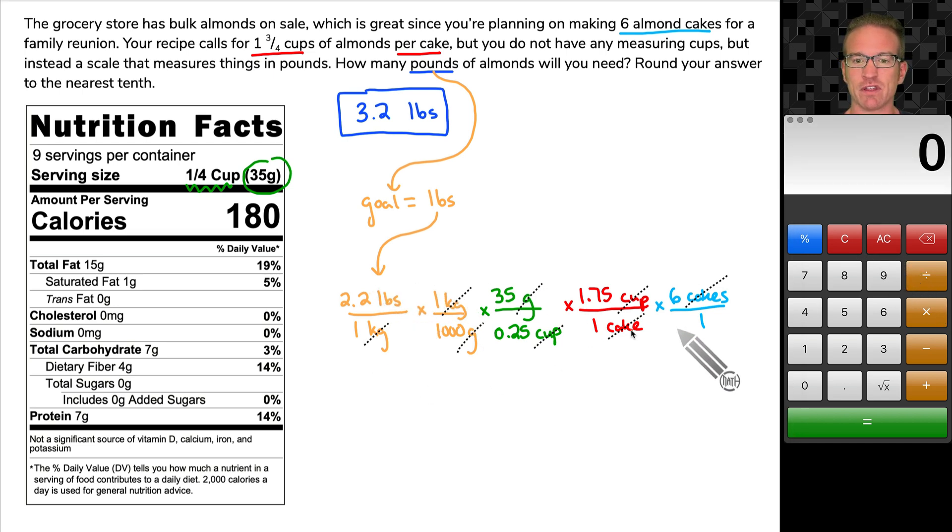We can skip any of these ones that we see here and we can multiply all of our top numbers. So I'm going to take 2.2 times 35 times 1.75 times 6. Now what I did there is I multiplied all of the top numbers. Now you can press equals if you want, but I'm not going to.